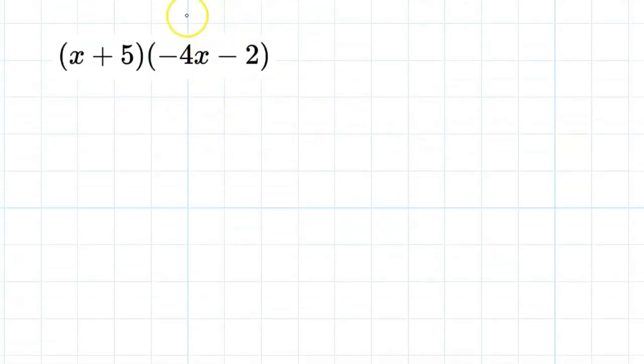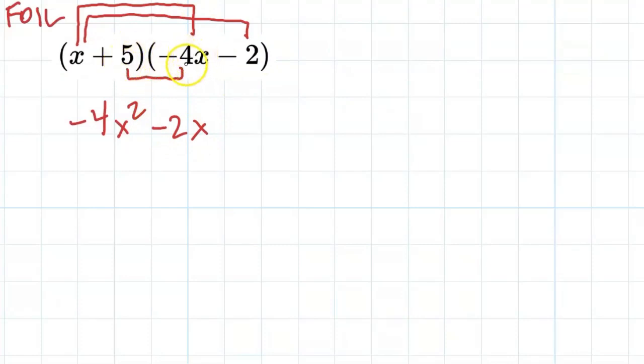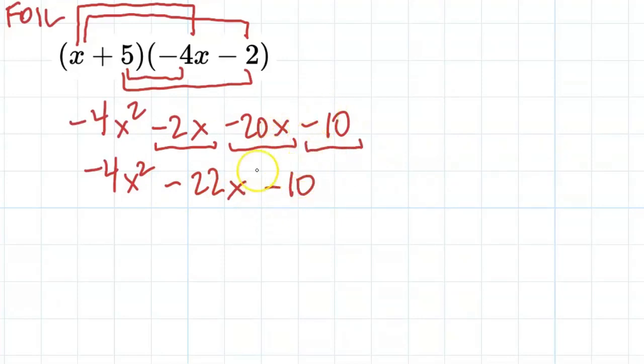And the last one that I'm going to do here is, again, another foil. So the first is x times negative 4x, so it's negative 4x squared. And the outside is going to be the outside one, so 2x times negative 2, which is negative 2x. I'm going to do the inside. It's 5 times negative 4x, which is going to be negative 20x. And the last, which is 5 times negative 2, which is negative 10. Again, the x squareds. There's no more x squareds, so we can just write that as negative 4x squareds. There is negative 2x's and negative 20x's, which gives us negative 22x's. There we go.